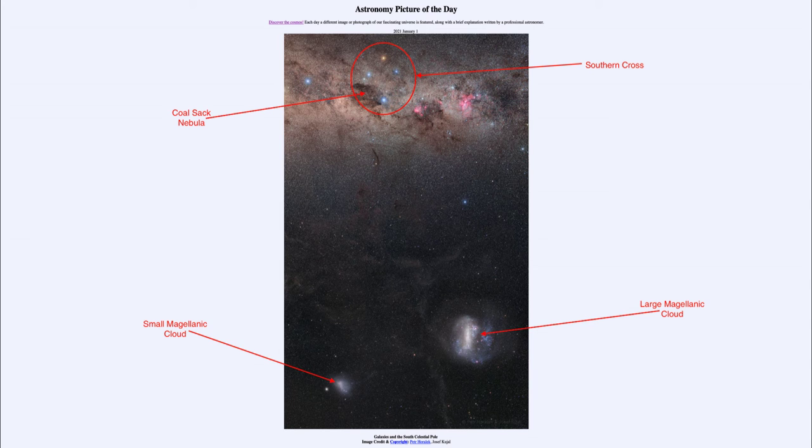You have to imagine a line through the Southern Cross at the top, through the top and bottom stars, and extend that down towards the Magellanic Clouds. That would then pass very close to the south celestial pole. However, Sigma Octantis is not a very bright star.